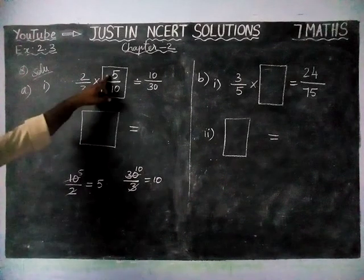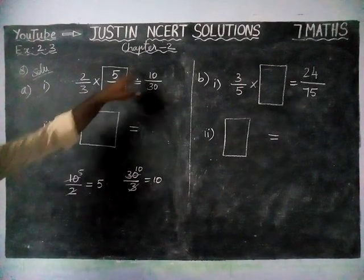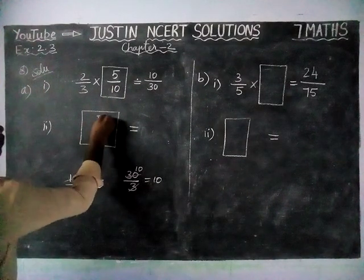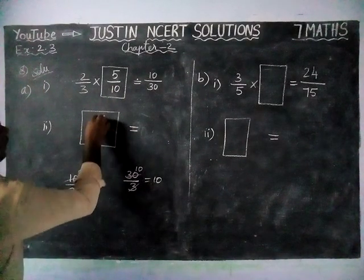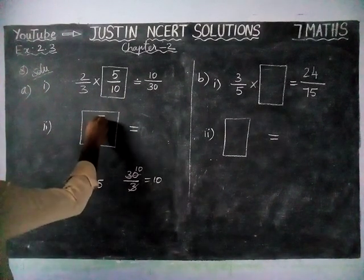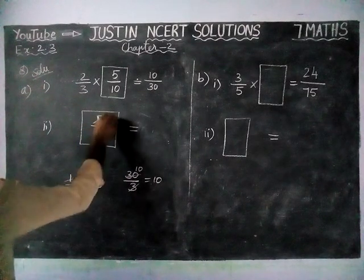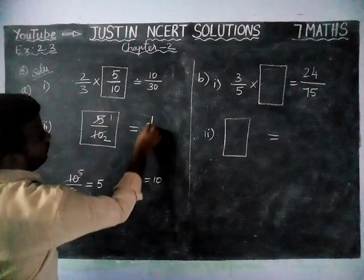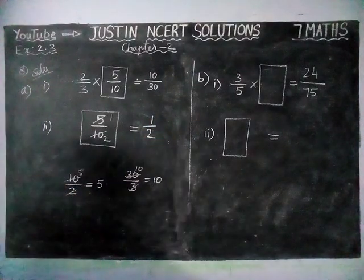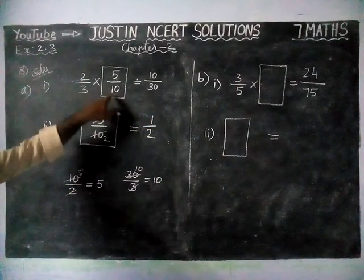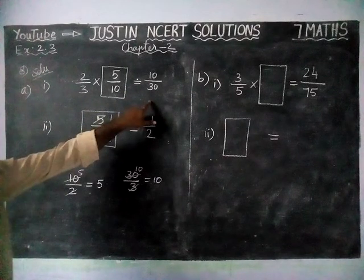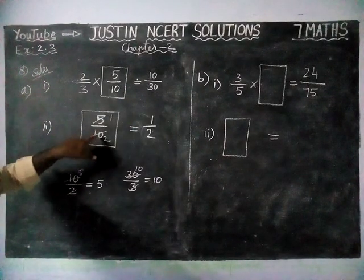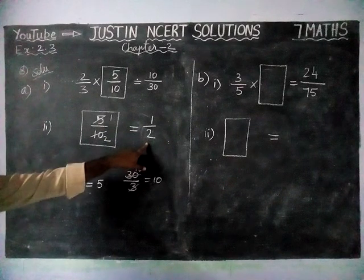Now, we found numerator and denominator. 2 5's are 10, 3 10's are 30. Now we have to simplify this answer. 1 5 is 5, 2 5's are 10. So, the final answer is 1 by 2. So, 2 by 3 into 5 by 10 is equal to 10 by 30, and the box value is 5 by 10. When we simplify 5 by 10, we get 1 by 2.